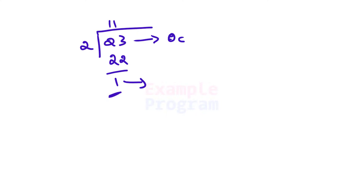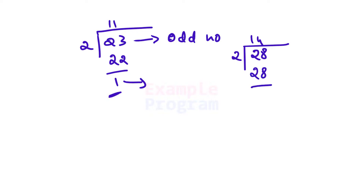For example, if you have the number 23, you divide it by 2 and you get a remainder of 1. Since this remainder is a non-zero value, 23 is an odd number. Similarly, if you have the number 28 and you divide it by 2, the remainder will be 0, so 28 is an even number.